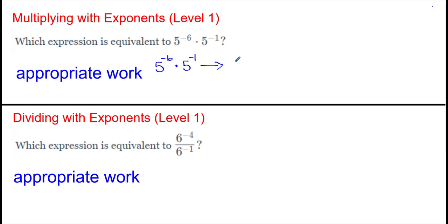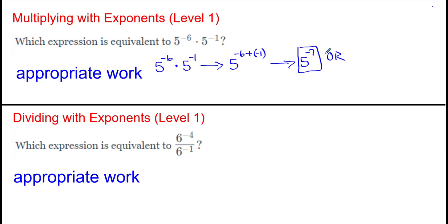Because I have a common base of five, I only have to write one base, and when dealing with multiplication I simply add the exponents together. For appropriate work I would write negative six add negative one. We still have a base five, and negative six added to negative one is negative seven, so that gives us five to the negative seven. But remember, anytime you have a negative exponent you can change that base and exponent and move it to its reciprocal position.